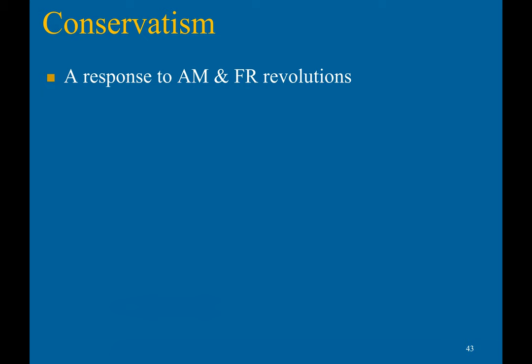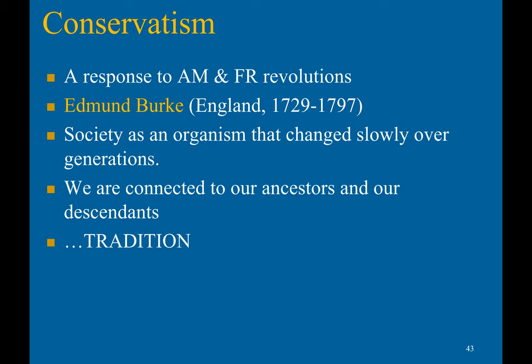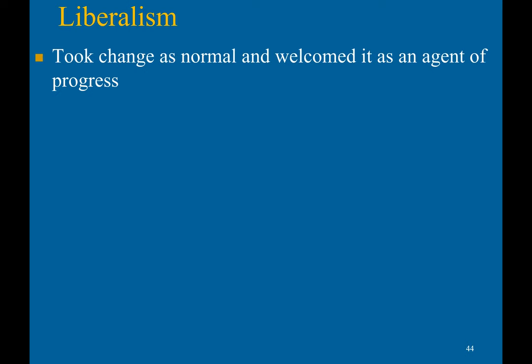Conservatism was a response to the American and French revolutions. Its father was Edmund Burke, a member of parliament in Britain. He viewed society as an organism that changed slowly over generations, emphasizing that we are connected to our ancestors and descendants. He heavily emphasized tradition. He approved of the American Revolution as a gradual evolution, but not the French Revolution, because he believed it was too radical. Liberalism took change as normal and welcomed it as an agent of progress — keep in mind, this is classical liberalism, not modern American liberalism, which is more progressivism.